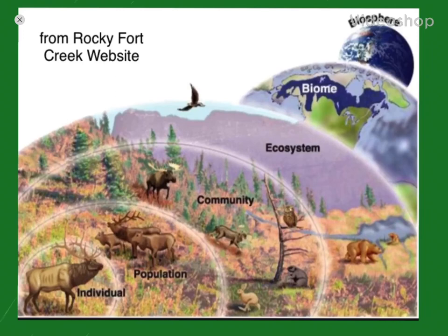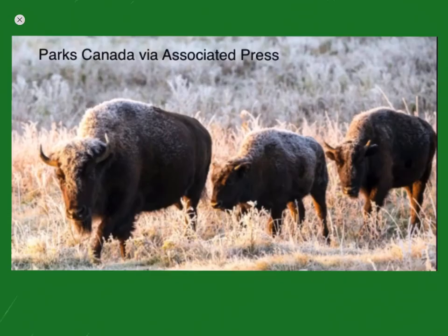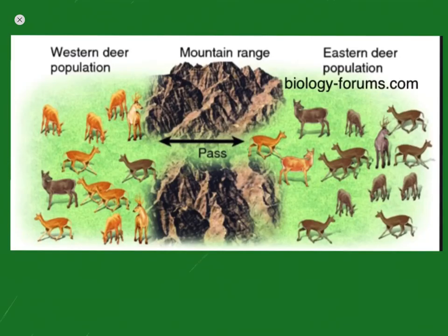Each species is divided into a number of populations. A population is the organisms of a single species that occupy a certain geographic location. For example, the population of wood bison living in the Hazama region of Alberta. Populations tend to be geographically isolated from other populations of the same species.